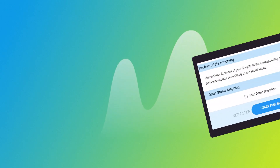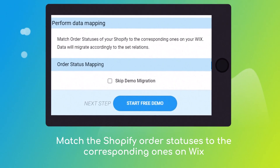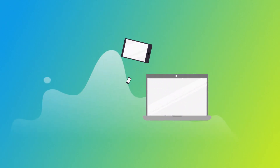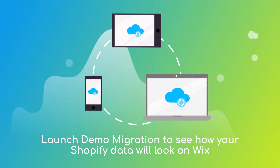Then, click the hamburger button to match your Shopify multiple stores, customer groups, and order statuses to the Wix ones. After checking the demo results, you're all set to launch the full migration.